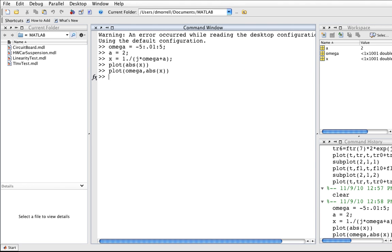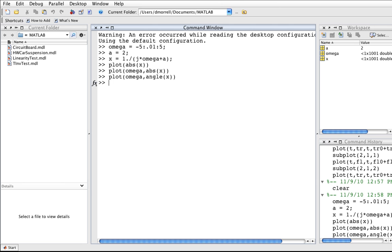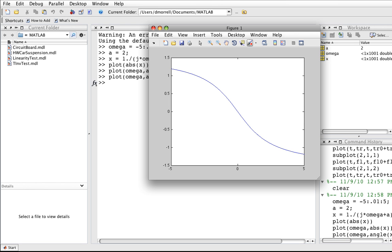I can also plot the phase. And there you have that. You can see that it's 0. So the phase plot is 0. And for values of omega that are negative, I get a positive angle. For values of omega that are positive, I get a negative angle.